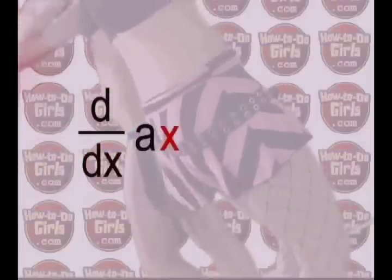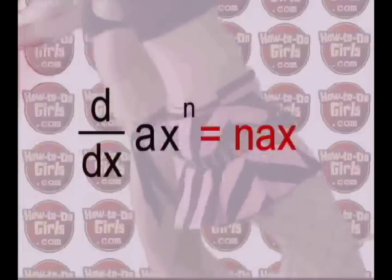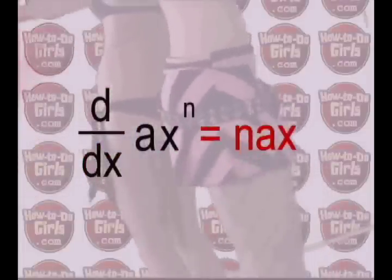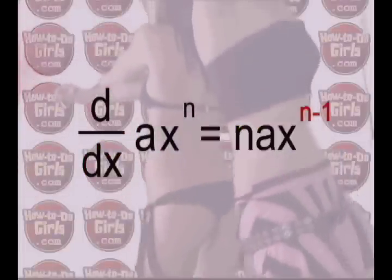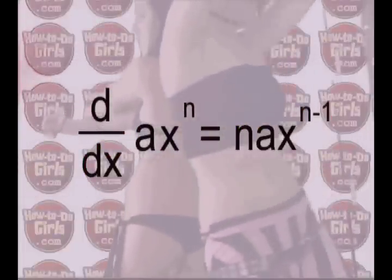You have a function x to the power of n, which means you have x multiplied n times. d/dx of ax^n is equal to n times a times x to the power of n minus 1.